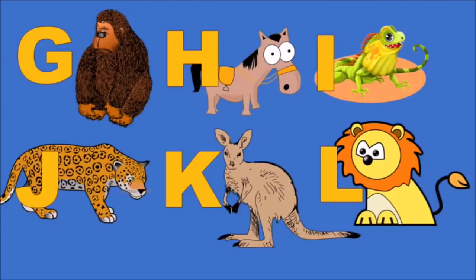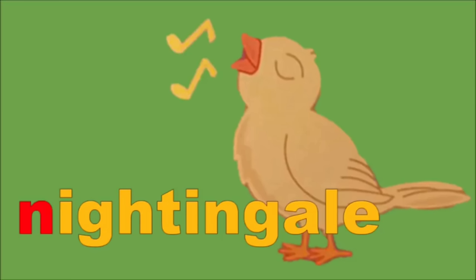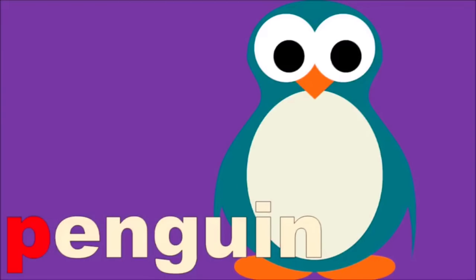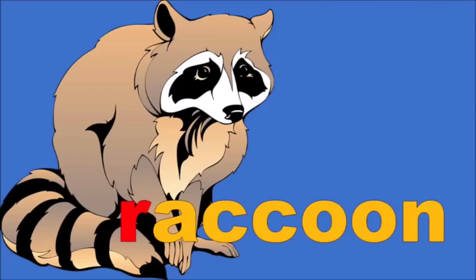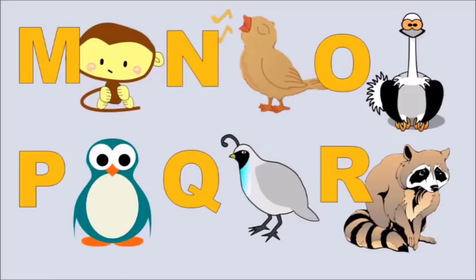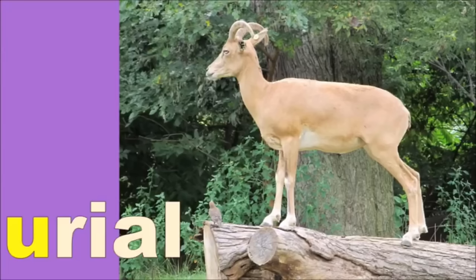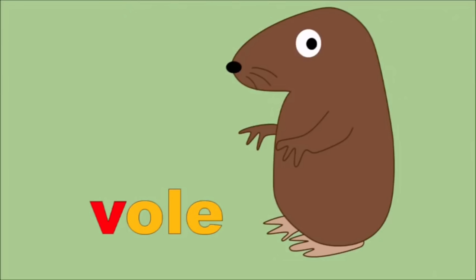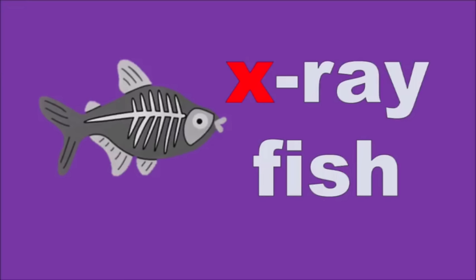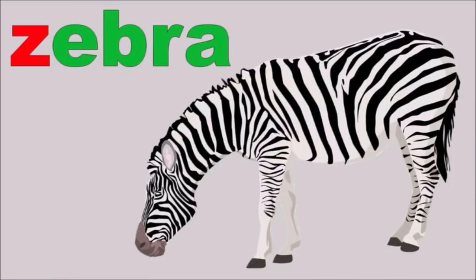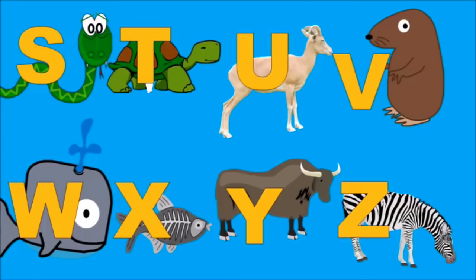These are the words from the Alphabets. M for Monkey. N for Nightingale. O for Ostrich. P for Penguin. Q for Quail. R for Raccoon. These are the words from the Alphabets. S for Snake. T for Tortoise. U for Uriel. V for Vole. W for Whale. X for X-Ray Fish. Y for Yak. Z for Zebra. These are the words from the Alphabets.